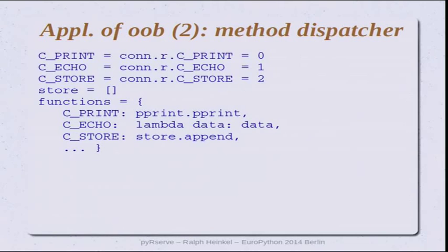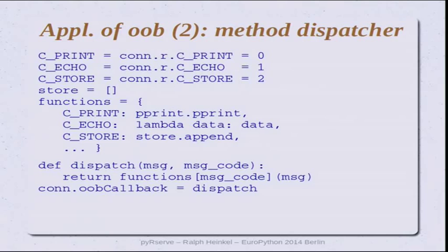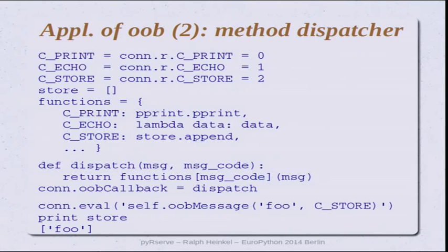Another very nice application is a method dispatcher. You can make a callback from R and control which callback method is actually called based on the message code. I define three constants on both the R and Python sides, set up a dictionary in Python with three different functions assigned to different message codes, and create a small dispatcher as the callback which looks up the appropriate function and calls it with the received message. It's a very nice feature — try it out if you haven't seen it.